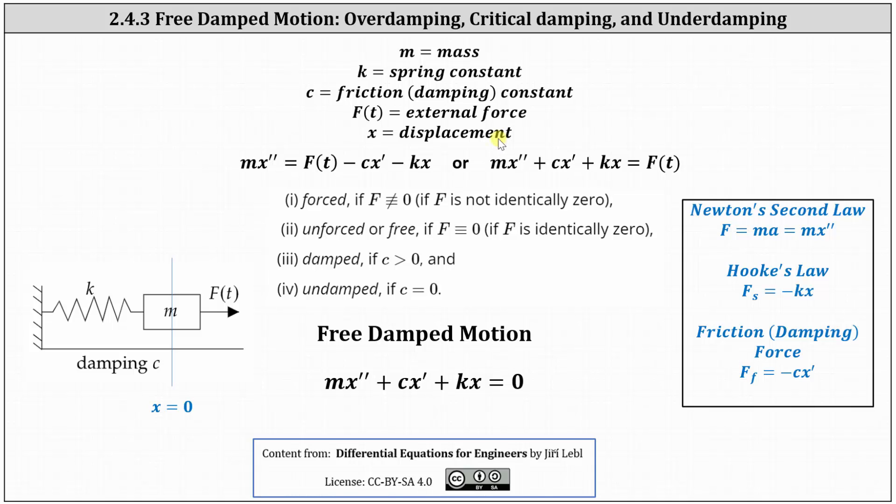we can model the system using mx double prime equals big F of t minus cx prime minus kx, where mx double prime is the force of the mass, big F of t is the external force, negative cx prime is the friction or damping force which is proportional to velocity x prime, and negative kx is the force of the spring which is proportional to displacement x.